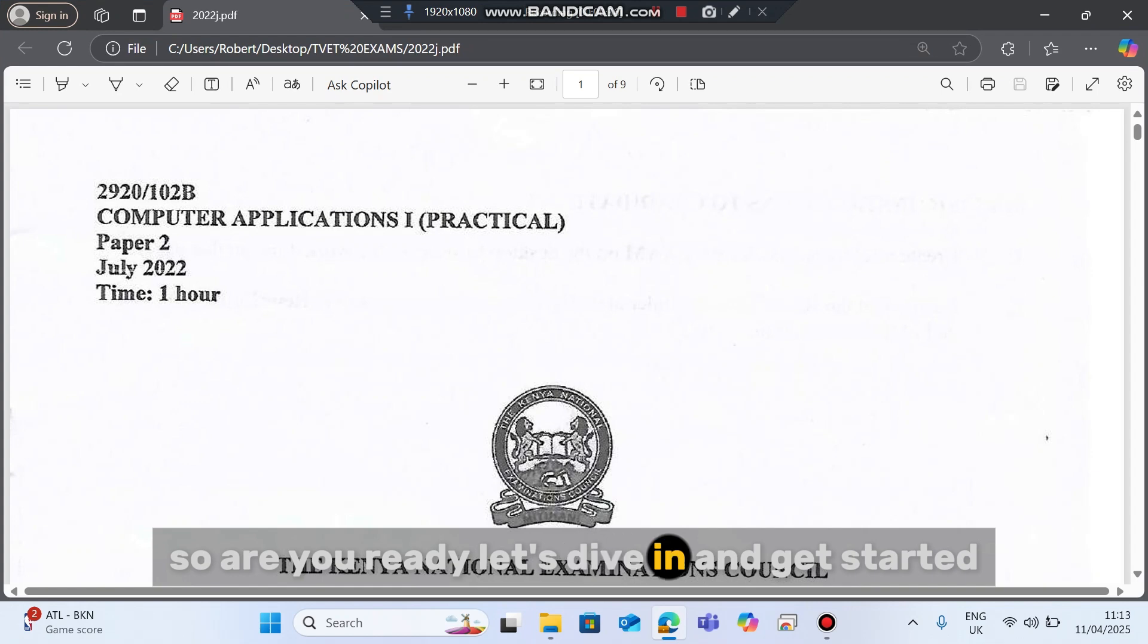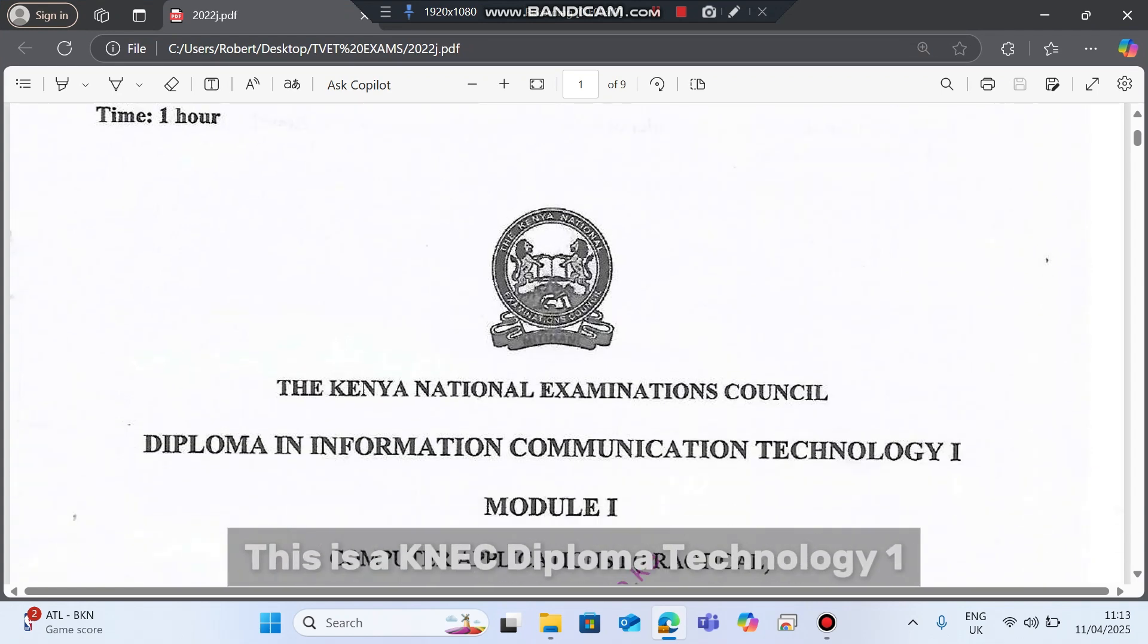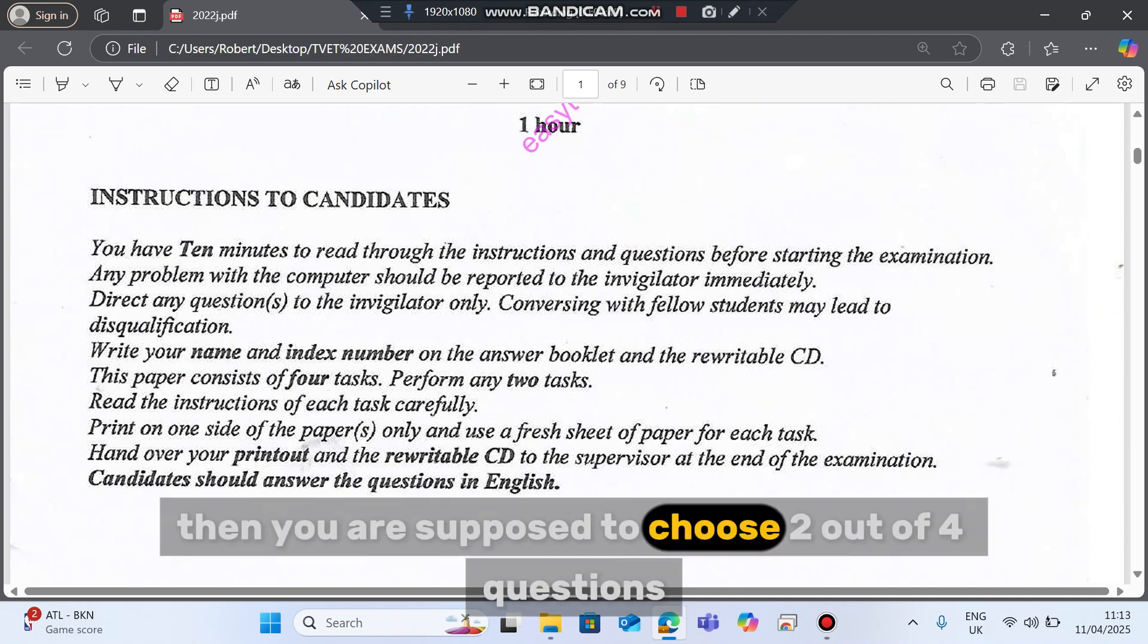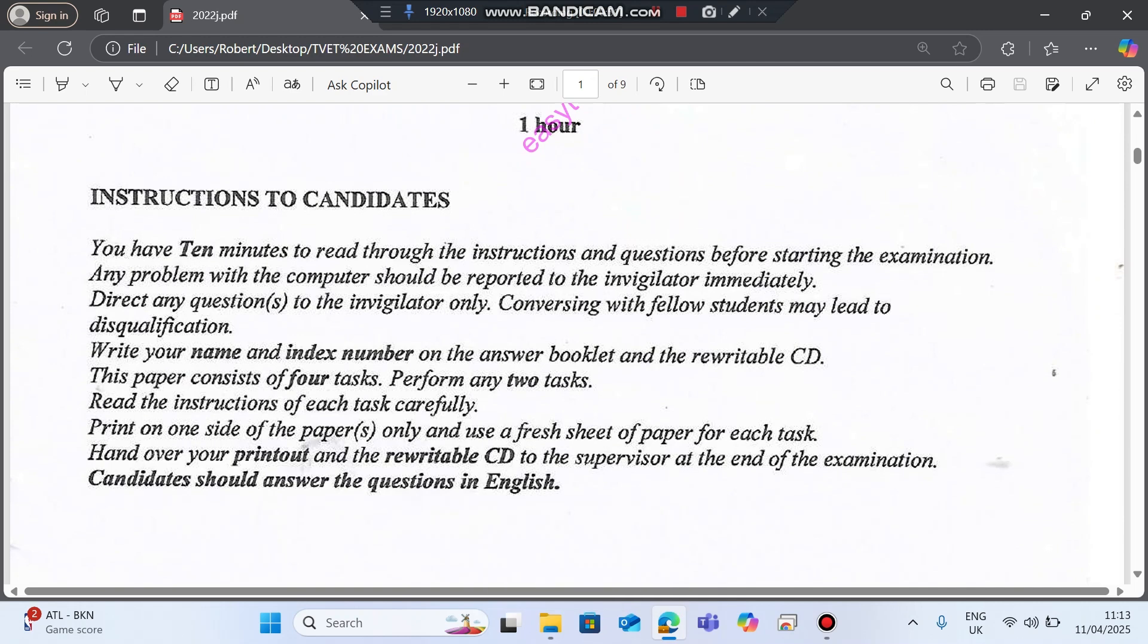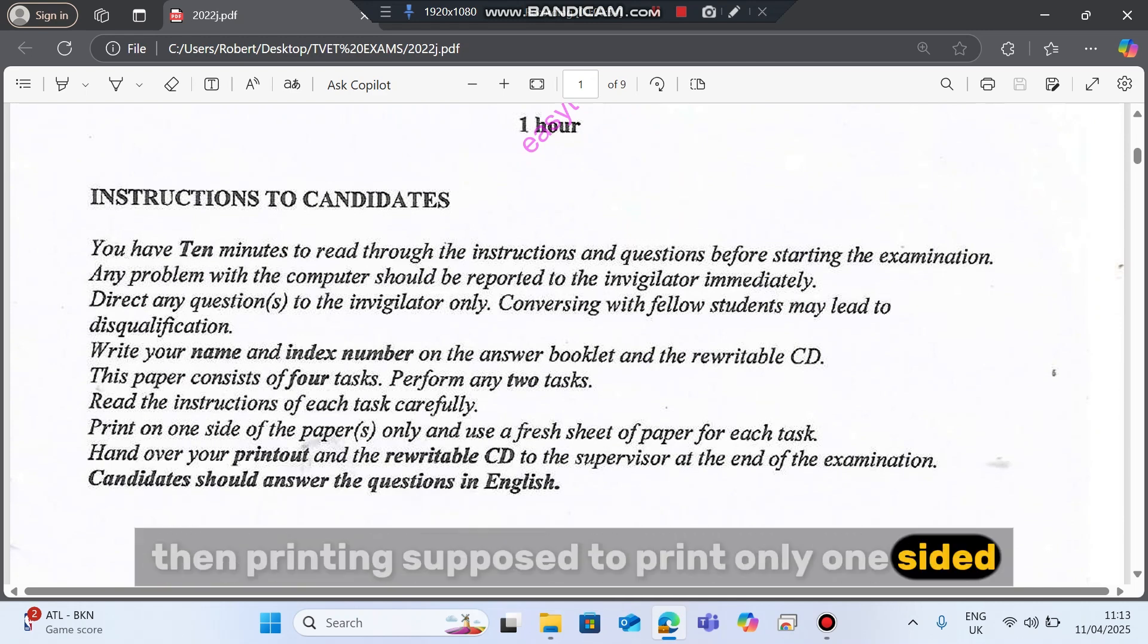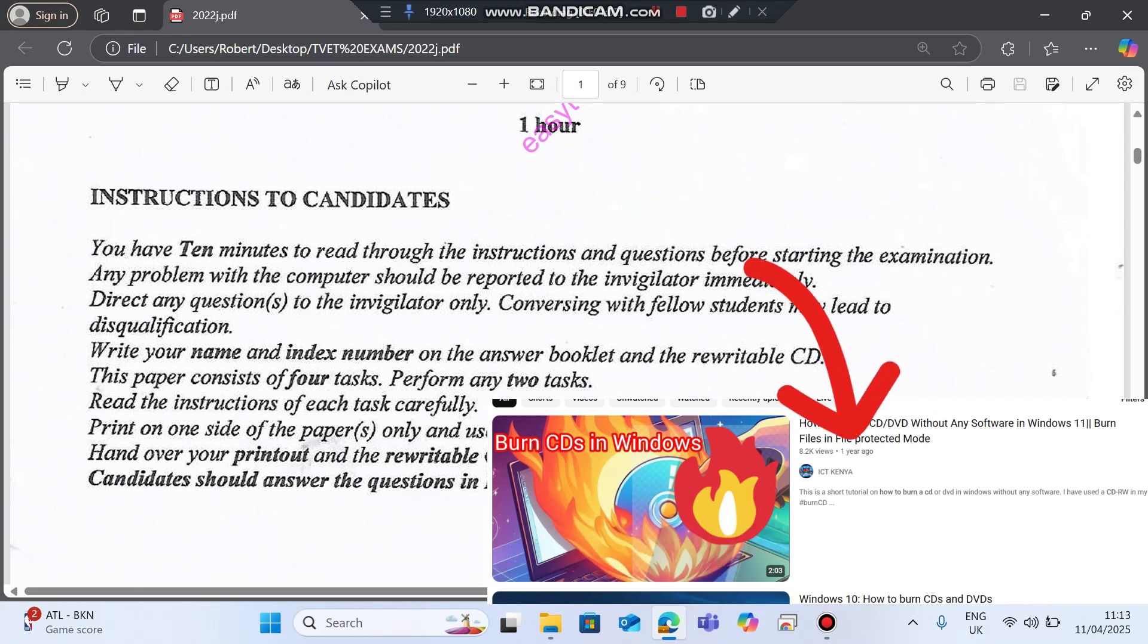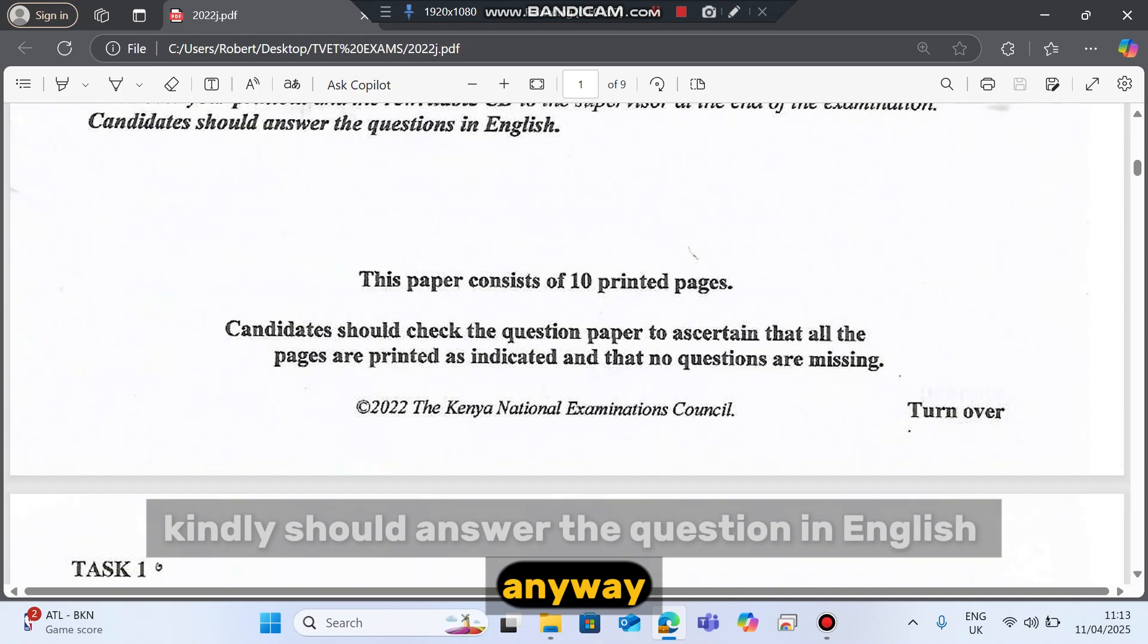So, are you ready? Let's dive in and get started. Here's a Kenya National Examinations Council diploma technology module one exam. We have basic instructions here. You're supposed to choose two out of four questions, printing is supposed to be only one-sided, you're supposed to burn your work in a CD. I've already done a video on how to do this, and candidates should answer the question in English.